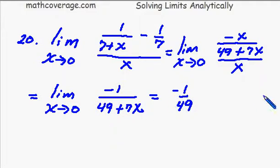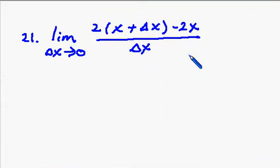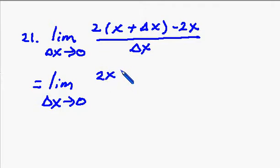All right, moving to number 21. And so what we're going to do here is we're going to just take this 2 and distribute it across and then simplify it down. So I'm going to go ahead and rewrite the limit as delta x approaches 0 of 2x plus 2 delta x and that's all over delta x minus 2x and that's all over delta x.